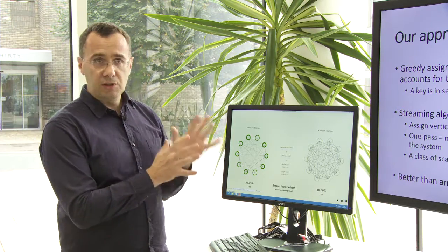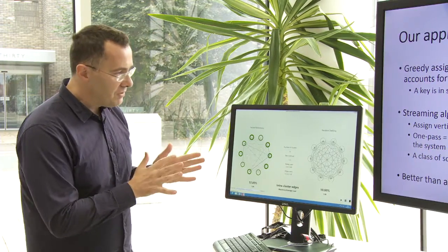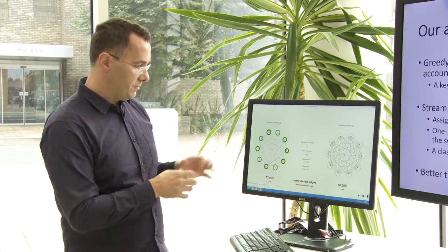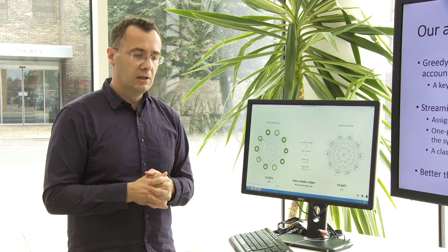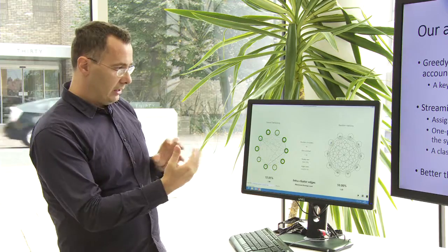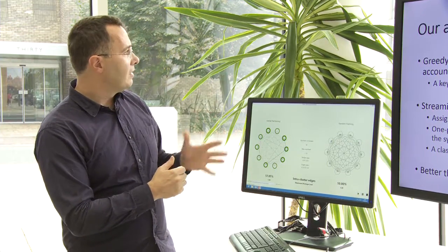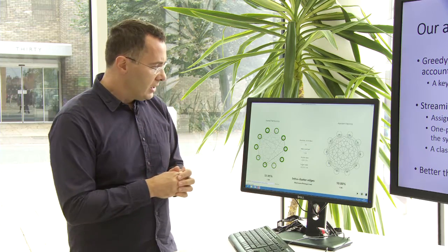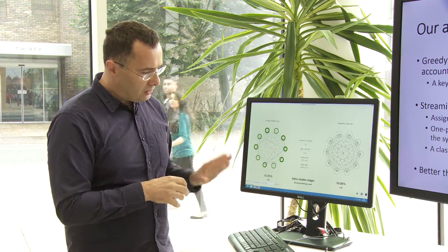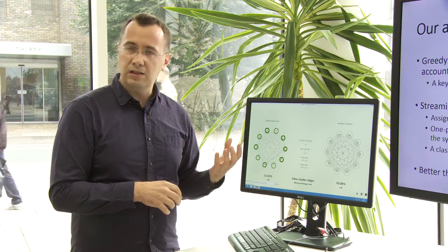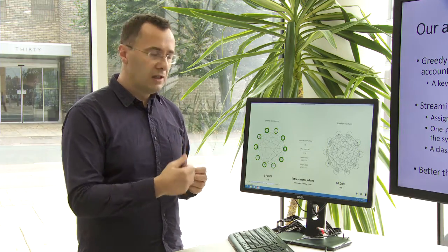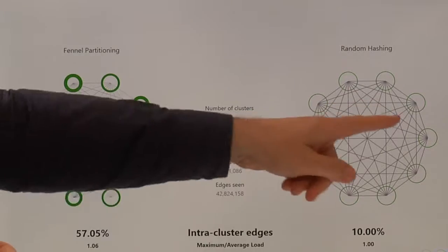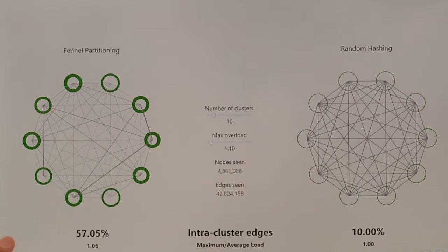I'll switch and show you how it works live. This is a live demo of partitioning a graph. It happens to be, I took one of the graphs which we can fit into a machine. This is a live journal graph representing relationships between nodes. There's about 5 million nodes and 50 million edges, roughly speaking. What is going to happen is that we are going to load this data, read this data in a streaming fashion, reading one node after the other, and we are going to assign these nodes into one of these 10 partitions which are represented by circles.